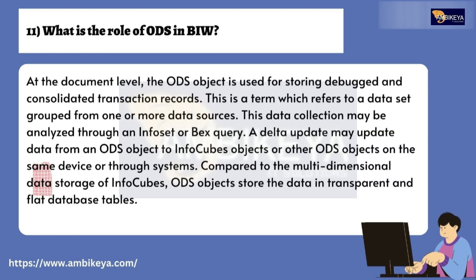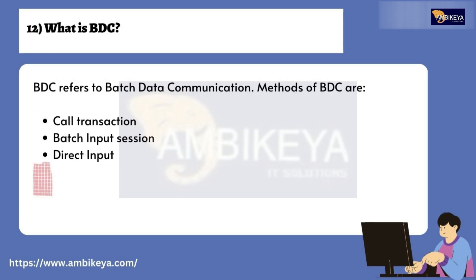Question number eleven: What is the role of ODS in BIW? At the document level, the ODS object is used for storing debugged and consolidated transaction records. It refers to a dataset grouped from one or more data sources, which can be analyzed through an InfoSet or BEx query. A delta update may update data from an ODS object to InfoCubes or other ODS objects. Compared to the multi-dimensional data storage of InfoCubes, ODS objects store data in transparent and flat database tables.